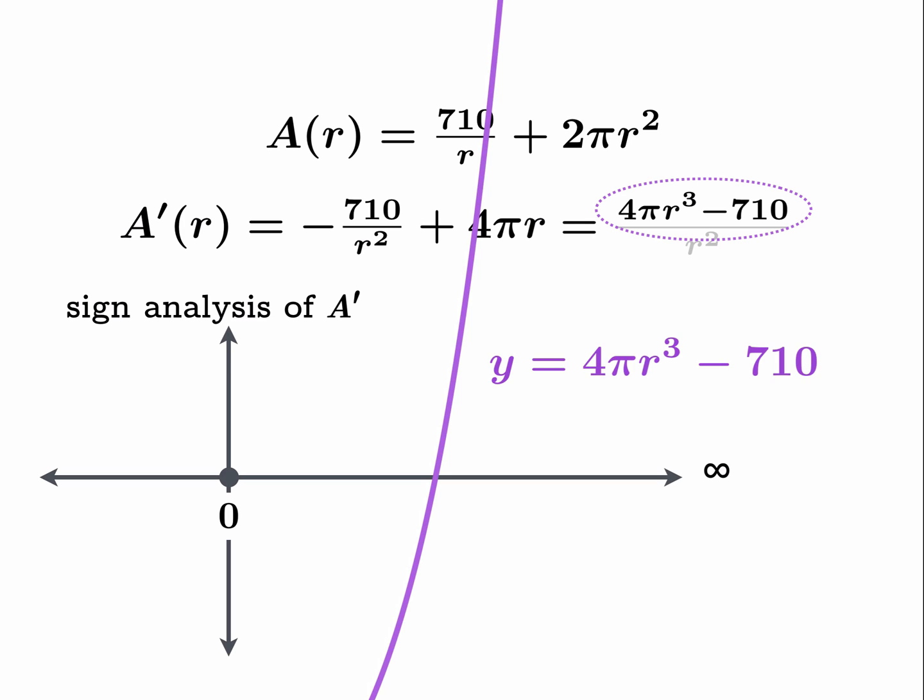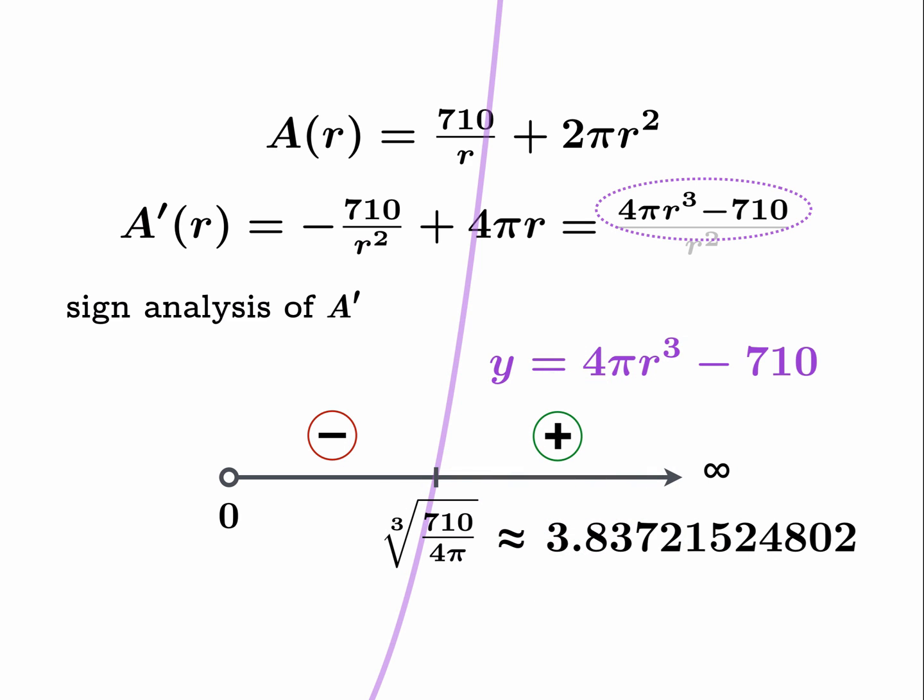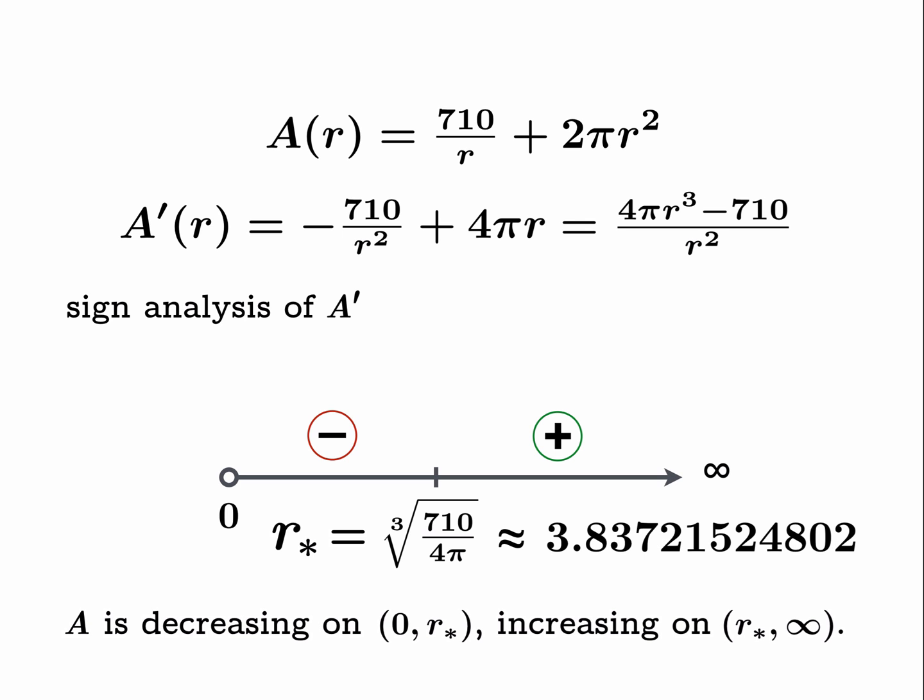Now there's only one root and it's easily calculated: it's the cube root of 710 over 4 pi, which is about 3.8. Recalling that we really only care about the analysis from 0 to infinity, this quick sketch tells us that the sign of the numerator, and therefore the sign of A prime, goes from being negative to positive across this critical number. That's our sign analysis of A prime, and there is our critical number, the site of our local minimum. A is decreasing on the open interval from 0 to r star, and then increasing on r star to infinity.